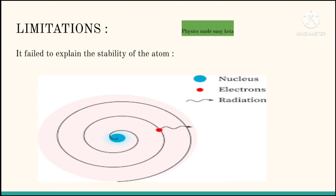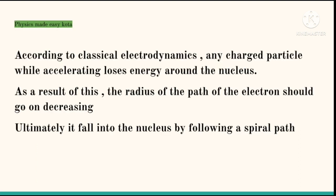Thus, electrons revolving around the nucleus are accelerating towards the nucleus of the atom. According to classical electrodynamics, any charged particle while accelerating or retarding loses energy through electromagnetic radiations. Therefore, the electrons revolving around the nucleus must lose energy continuously.